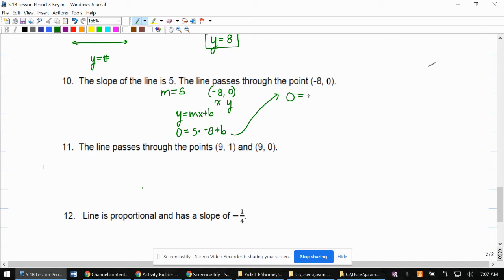We have 0 equals negative 40 plus b, and we want to isolate b by adding the opposite of this number to both sides.